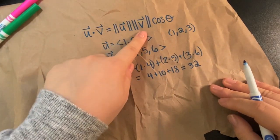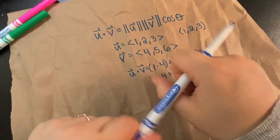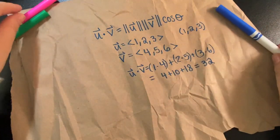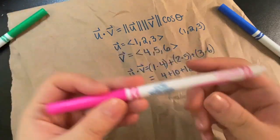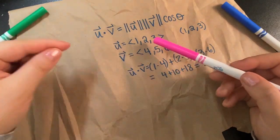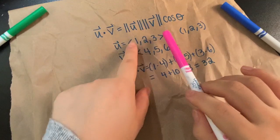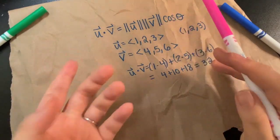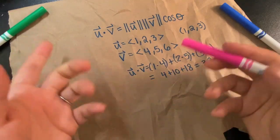The magnitude of U and the magnitude of V are the lengths of them, which in general, based on what we said was the definition to go from zero, zero, zero to this point, that's going to be you can find the distance between two points with the distance formula, right?